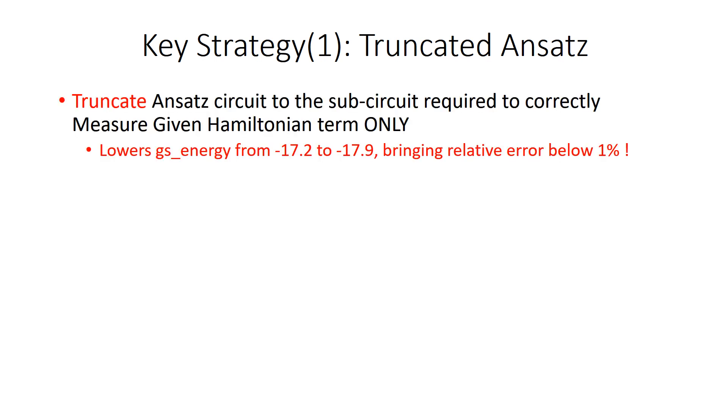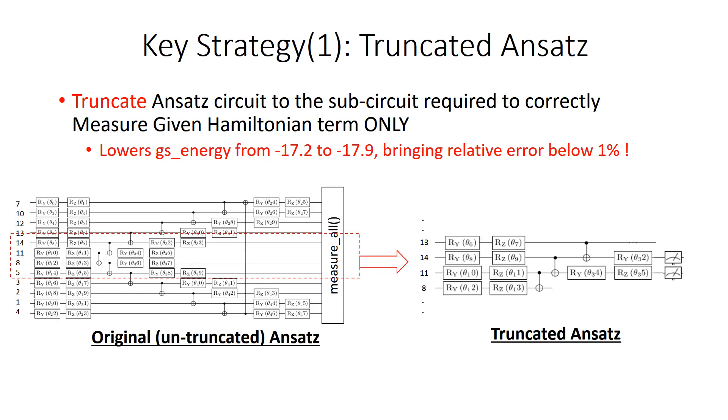The main strategy to achieve a very accurate ground state energy involves the use of truncated ansatz. The basic idea is that we can possibly truncate the ansatz circuits to a sub-circuit that is used to measure a given Hamiltonian term only. Not all the qubits and gates are involved in the measurement of the given Hamiltonian term. That means we can select a portion of a circuit for the measurement of the Hamiltonian term under consideration.